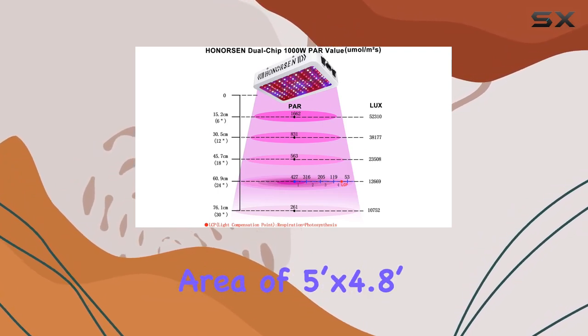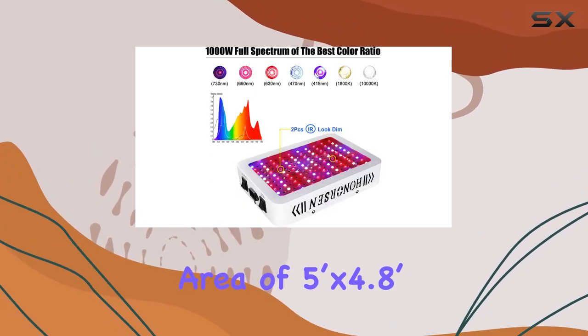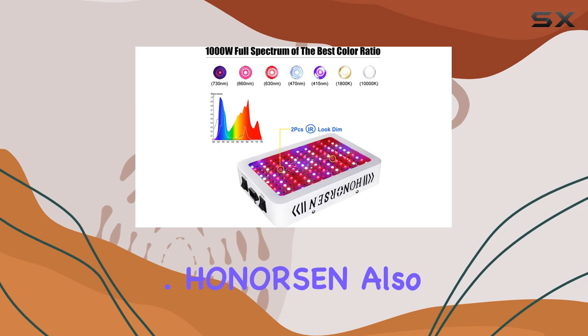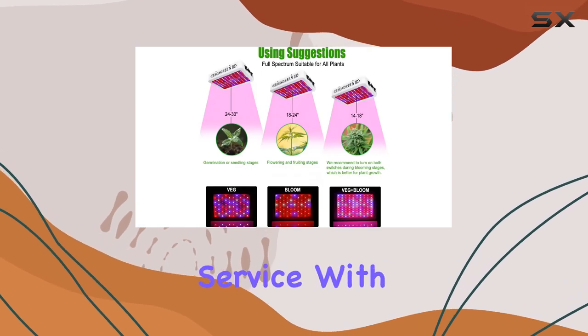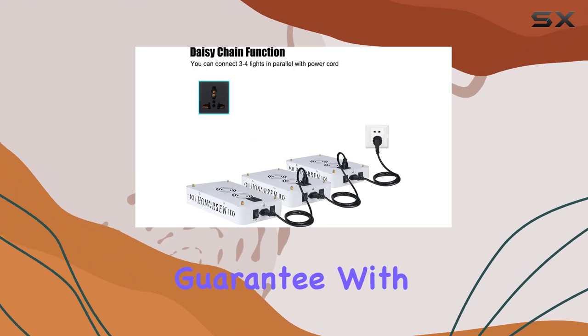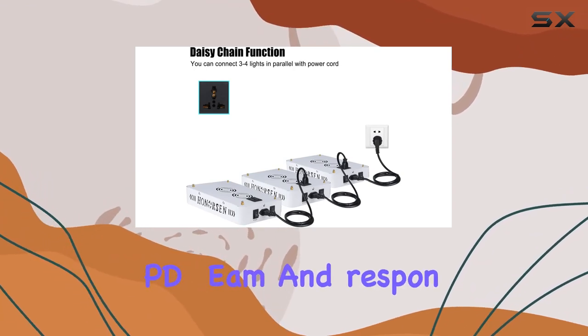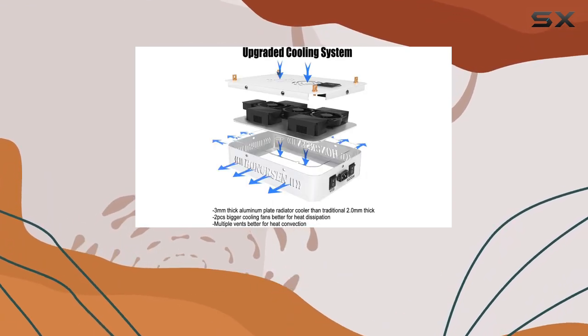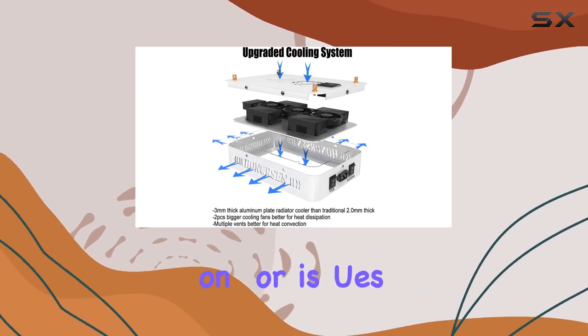It's well suited for a growing area of 5 feet by 4.8 feet at a height of 24 inches. Onersen also offers a professional service with a 2-year warranty and a 30-day satisfaction guarantee. With a strong R&D team and responsive customer support, they ensure that any questions or issues are addressed promptly.